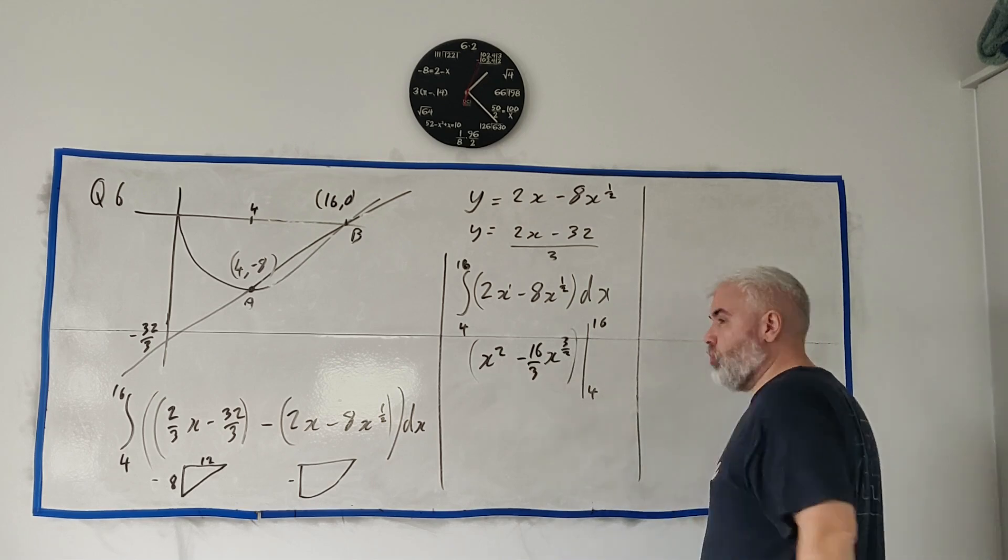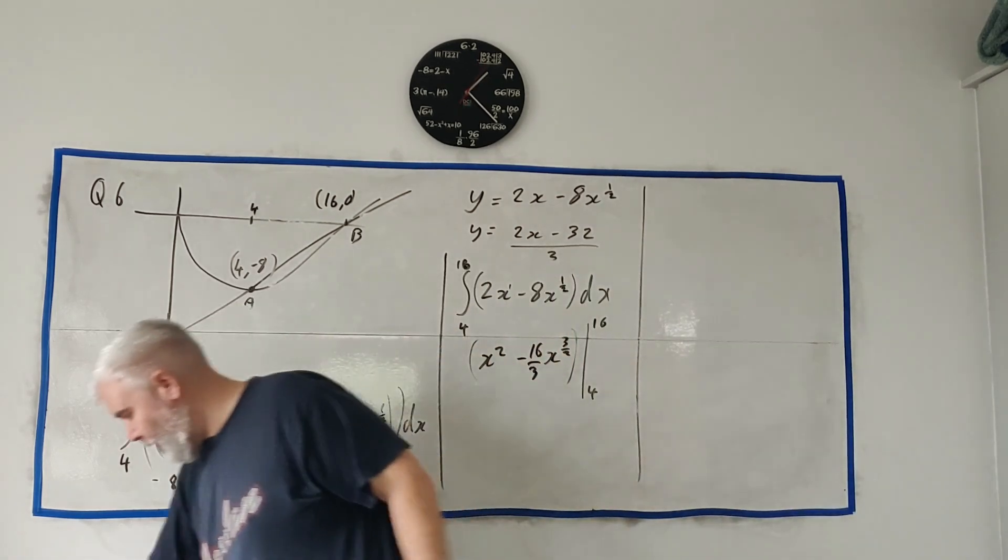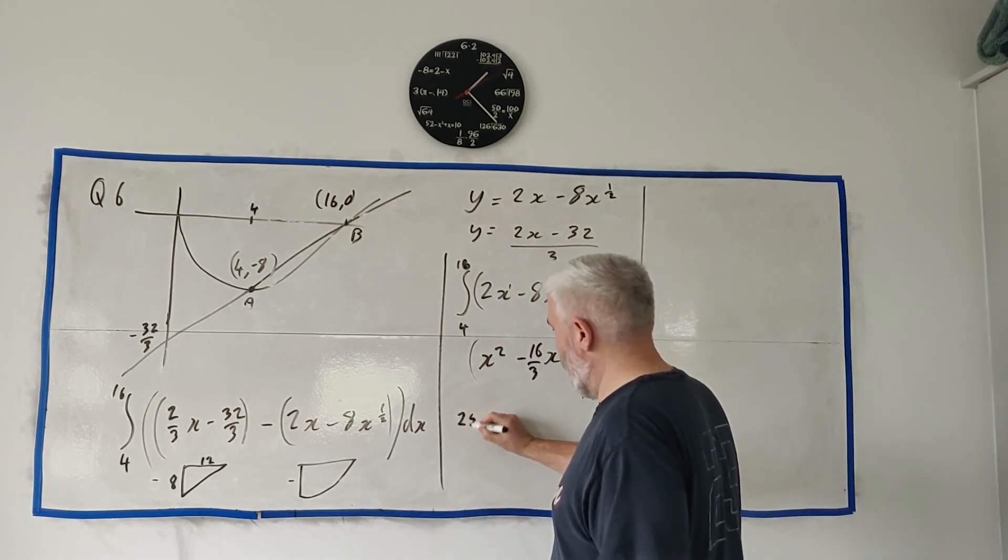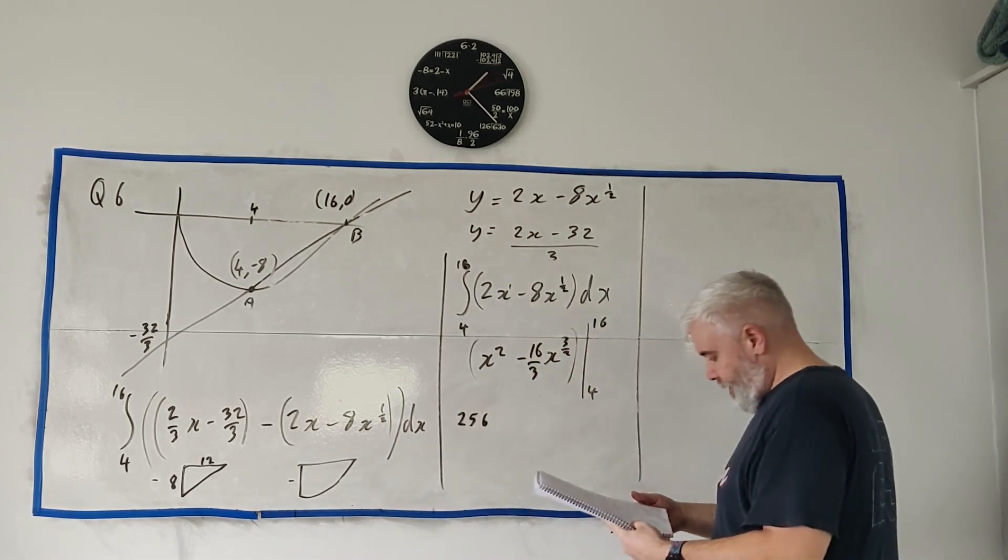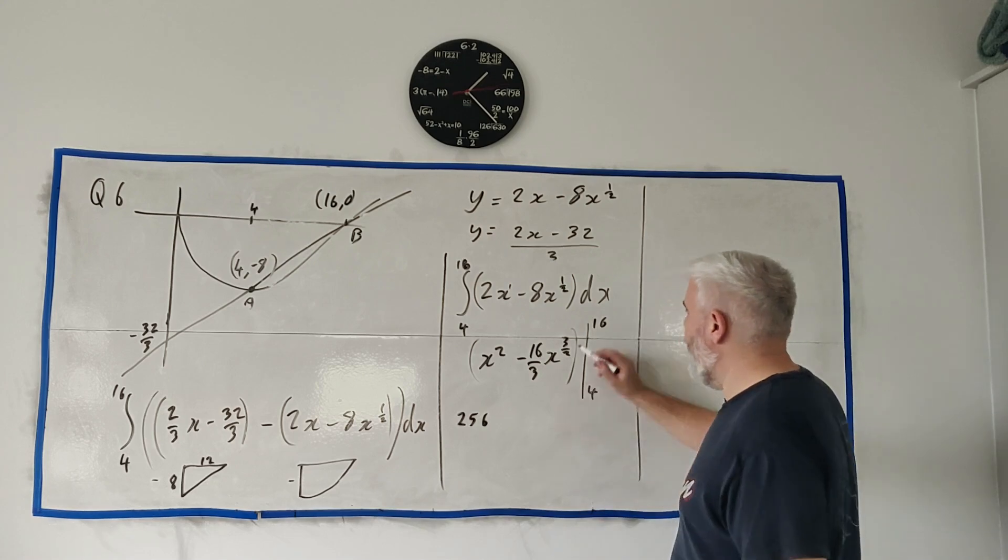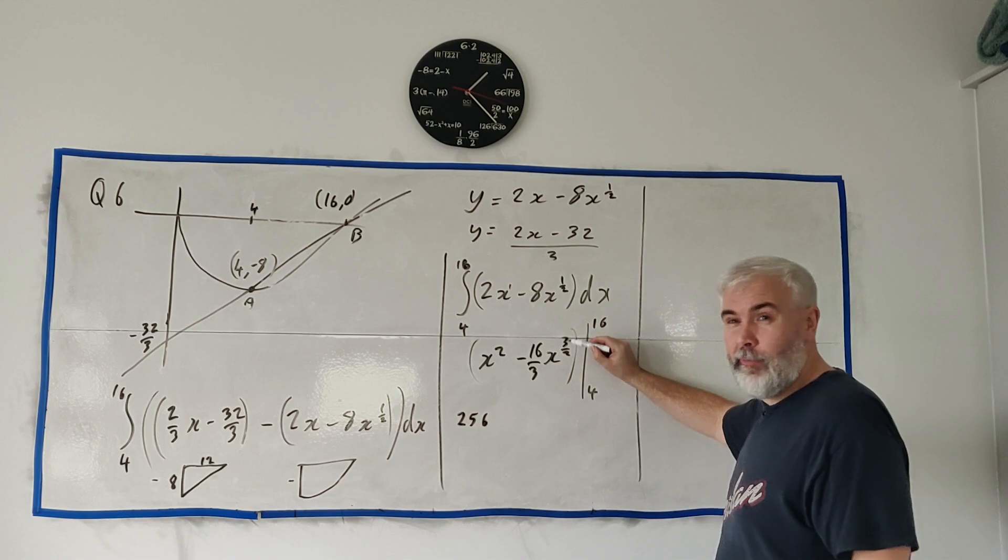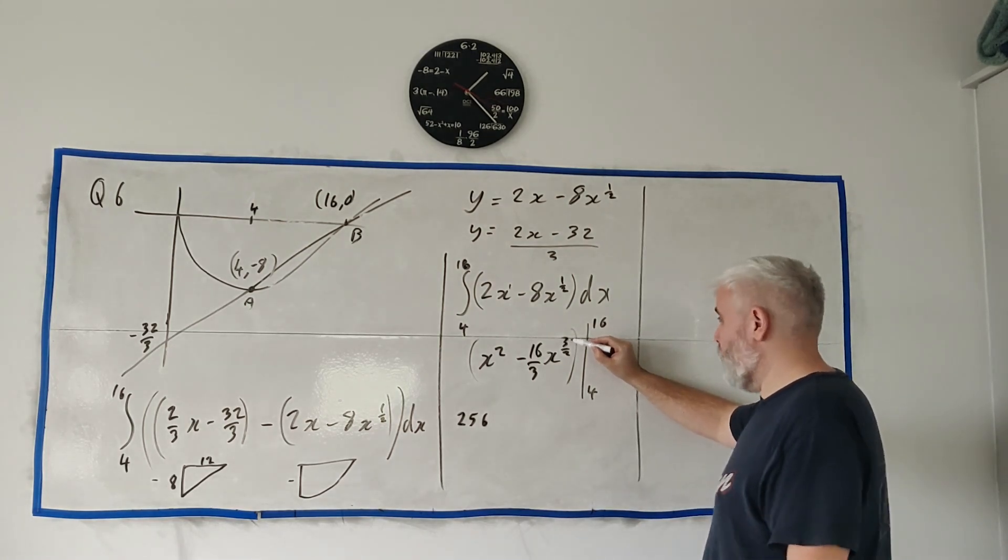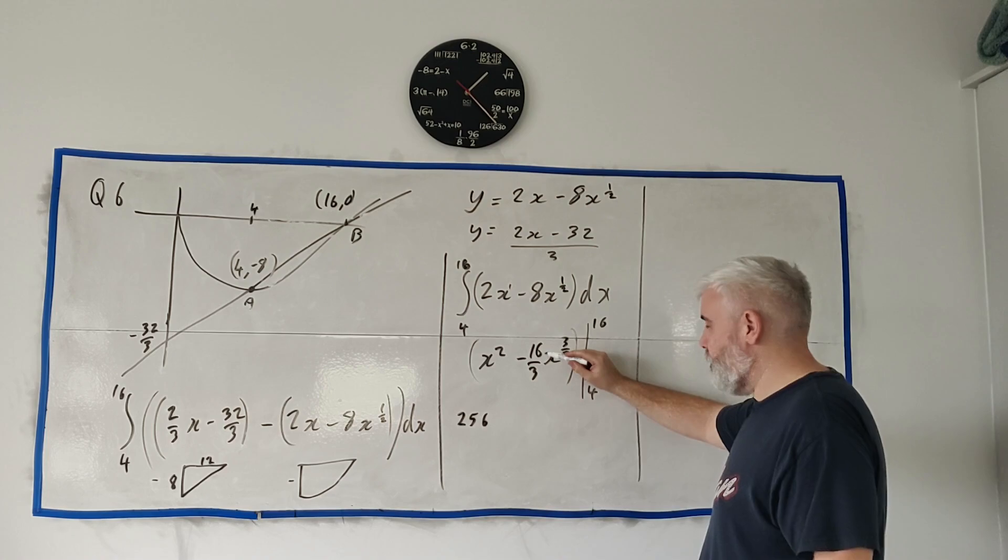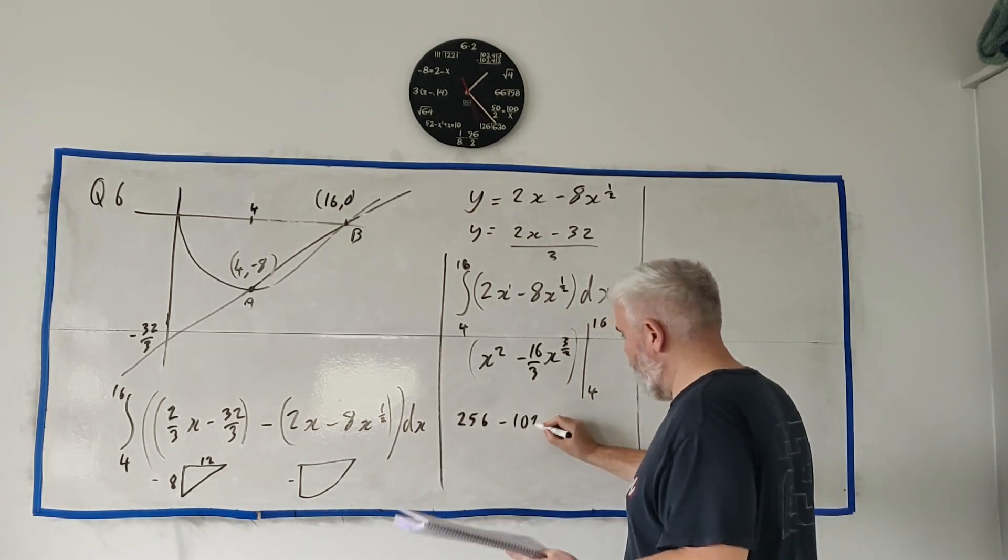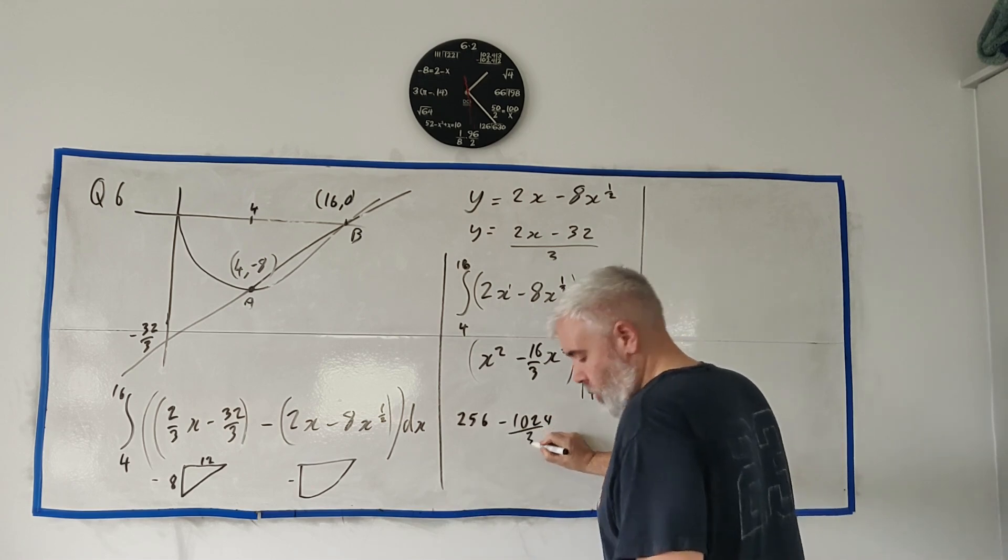So let's put all that in. 16 squared, I believe, I better go to my notes for this one, and I believe is 256. And then the square root of 16 is 4. 4 to the power of 3 is 128. 128 times 16 divided by 3. I'll look at my notes here. 1024 over 3.